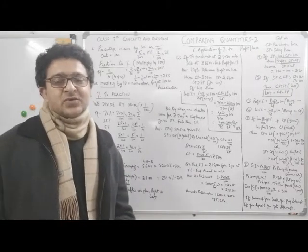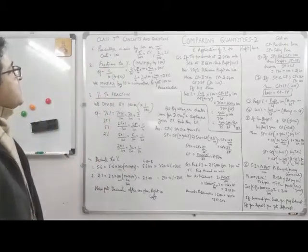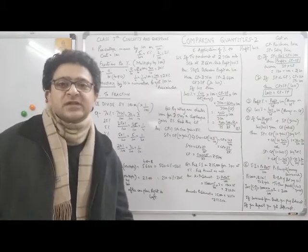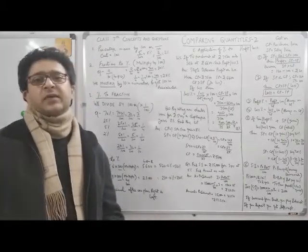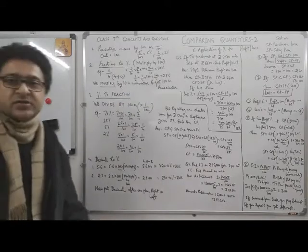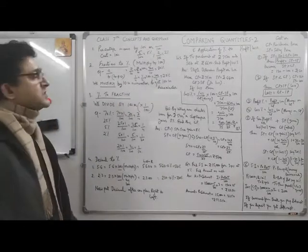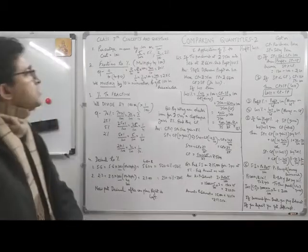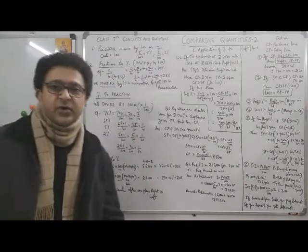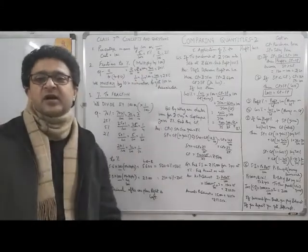Let's get started. Percentage — 'per' means 'per' and 'cent' means 100. So anything upon 100 is percentage. For example, 5% is 5 upon 100, and 2% is 2 upon 100. So anything upon 100 is percentage.